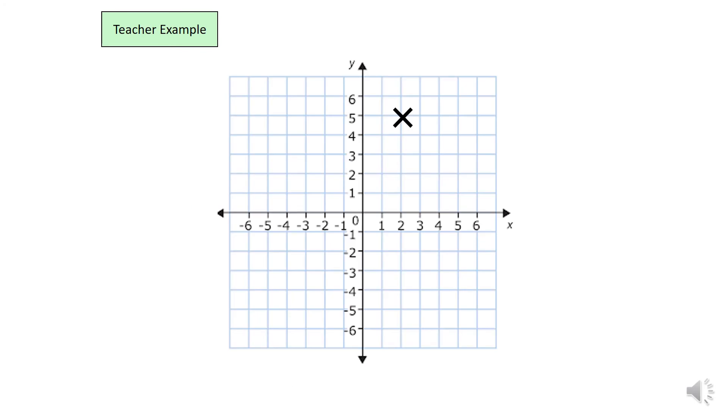So, looking at this example over here, from 0, as always, we are going 2 across and 5 up. Okay, 2 across—we went right 2, didn't we? So, positive 2. And we went up 5, so positive 5. 2, 5 is our coordinate.